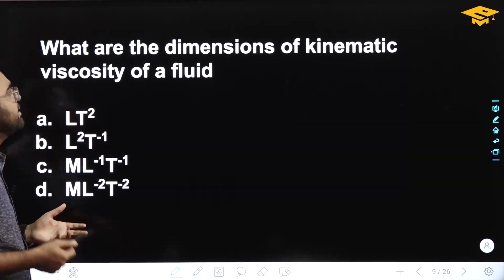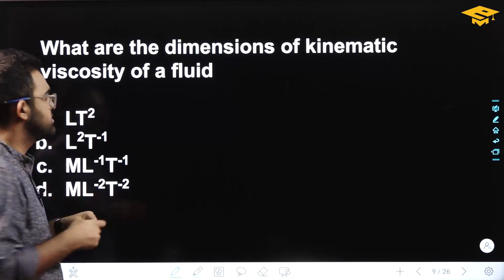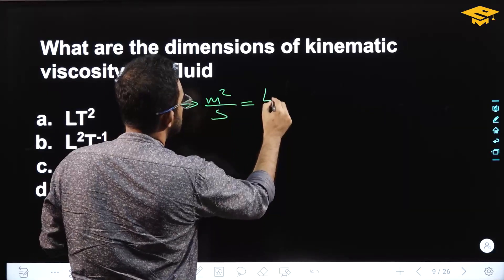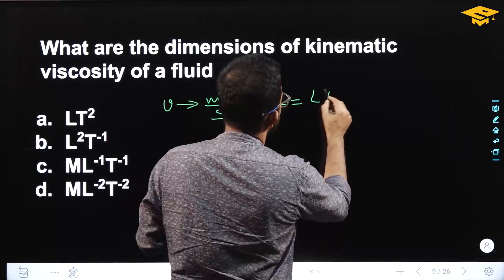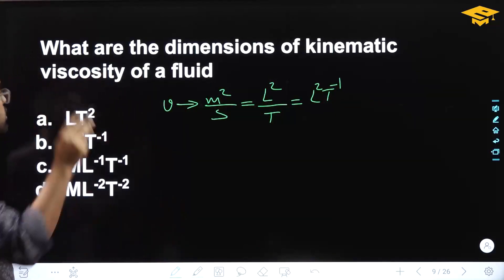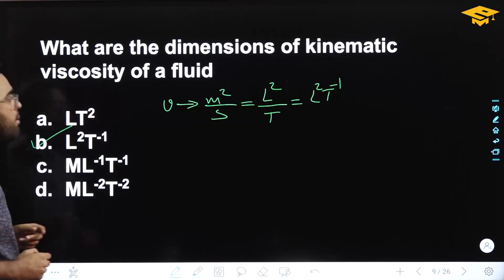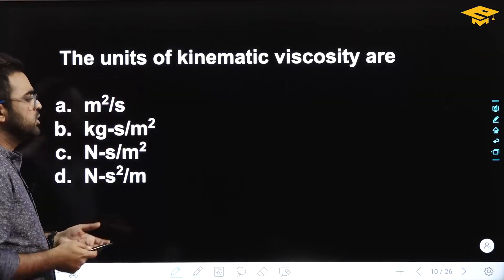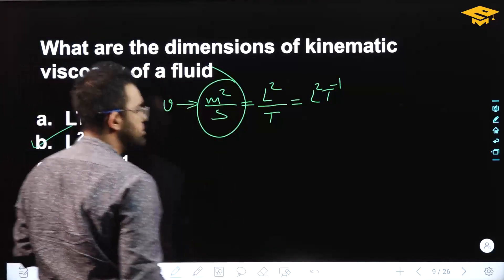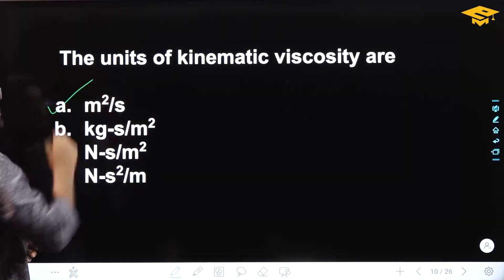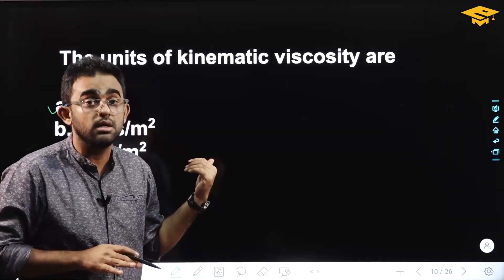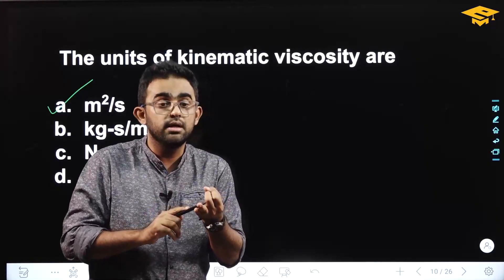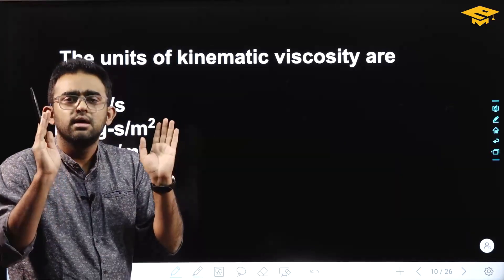What are the dimensions of kinematic viscosity? Kinematic viscosity nu has units of meter square per second, so the dimension is L² T⁻¹ — option B is the right answer. The unit of kinematic viscosity is meter square per second — option A is correct. These are all previous exam questions from PSE, AMV, SSI, and different exams.